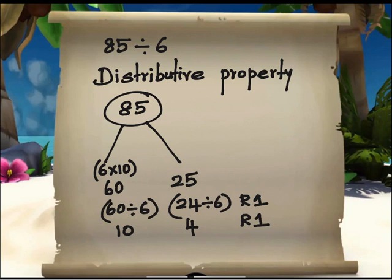So 10 plus 4 is 14. 14 is a quotient with a remainder 1. So this is the distributive property.